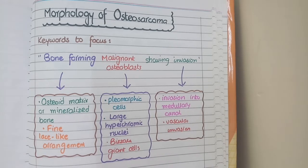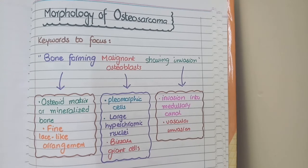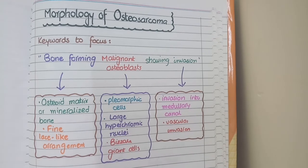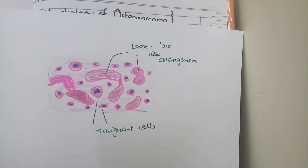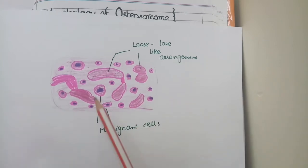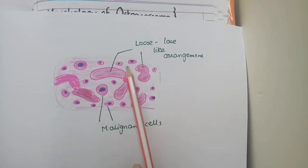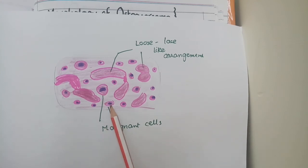These malignant osteoblasts show features of pleomorphism, large hyperchromatic nuclei, and some cells are large — called giant cells. The third keyword is invasion: tumor cells invade into the medullary canal of bone and can also invade vascular structures. Overall, on microscopy you will see fine lace-like osteoid matrix, pleomorphic malignant osteoblasts with large hyperchromatic nuclei, and invasion into the medullary canal or vascular invasion.